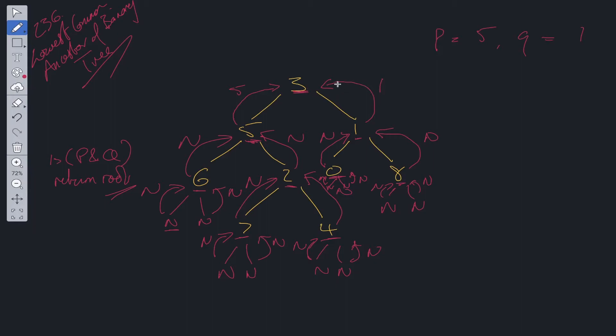Then at 3, we check whether P and Q is present. Yes, they both are. So we return the root. So we return this value. That's the basic understanding of this question.